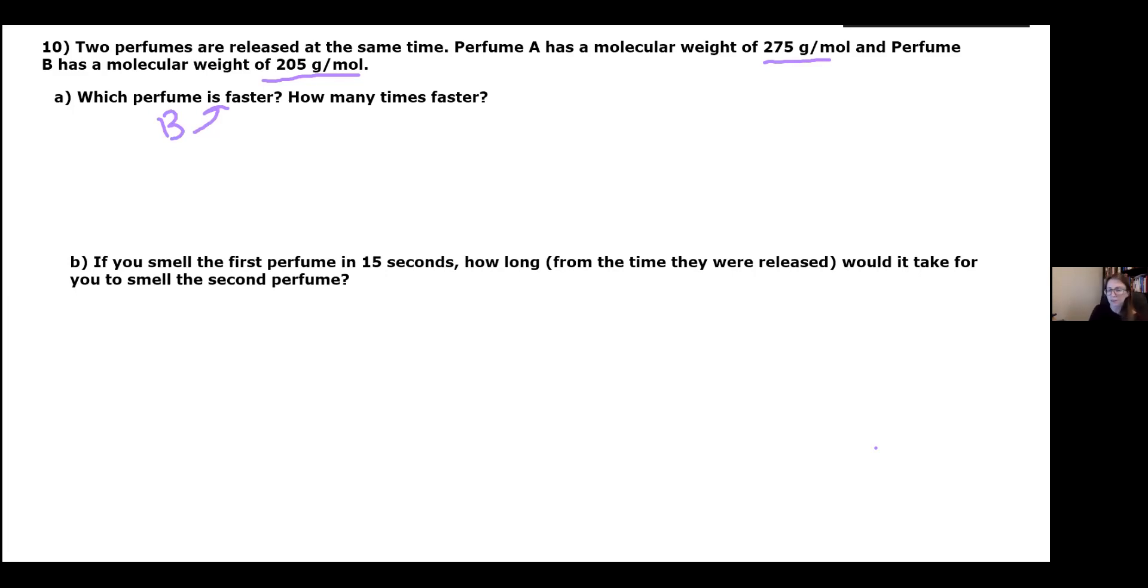When we are trying to figure out how many times faster, that's when we're essentially using the formula R1 over R2 equals square root of MW2 over MW1. However, we don't have four different things to plug in. We're actually solving for, as a whole, this R1 over R2 fraction. So the trick to putting things in the right spot here isn't just making sure you're using the formula with the diagonal correctly.